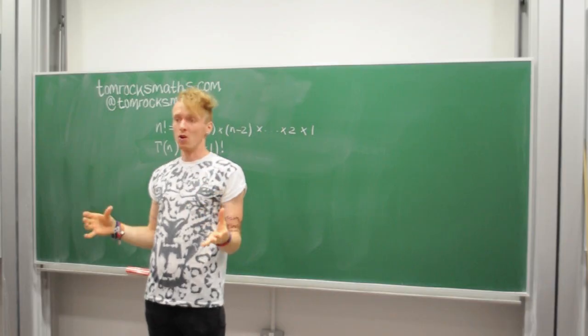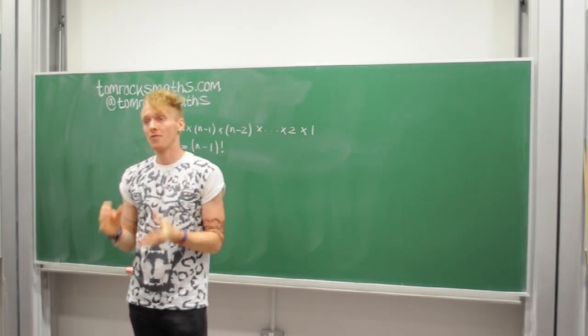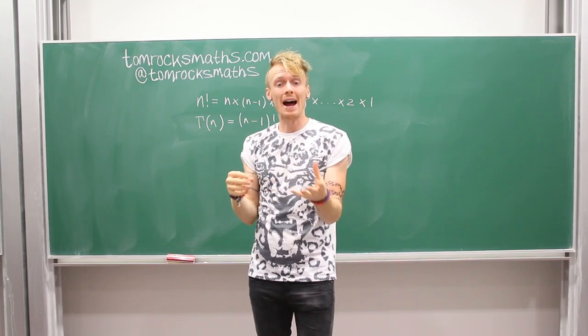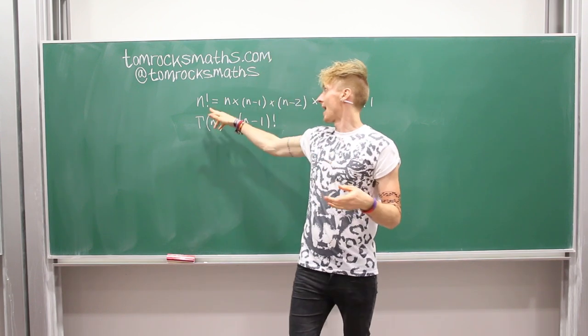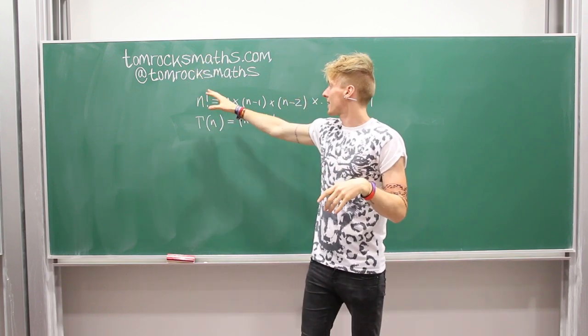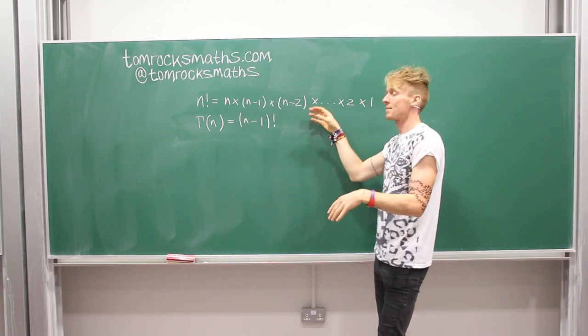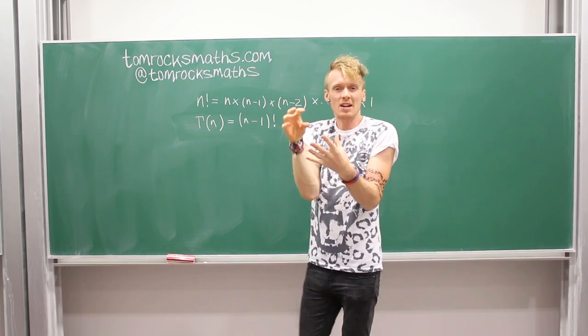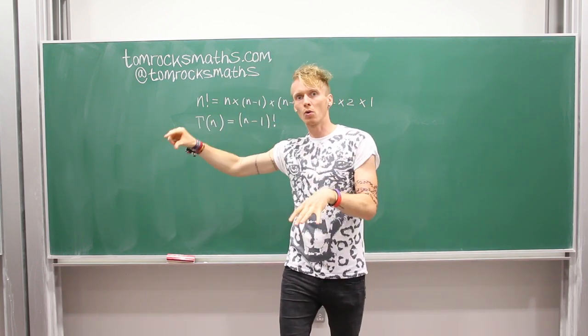In its simplest form, the gamma function is just an extension of the factorial function. If you take a positive whole number n and then you do n factorial, we represent the factorial function by an exclamation mark. And n factorial is simply n times n minus 1 times n minus 2 times dot dot dot times 2 times 1. So basically the factorial of a number is that number multiplied by all of the whole numbers below it.